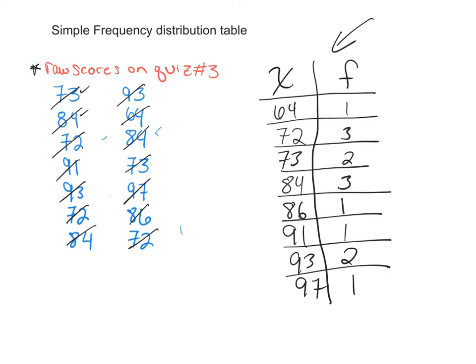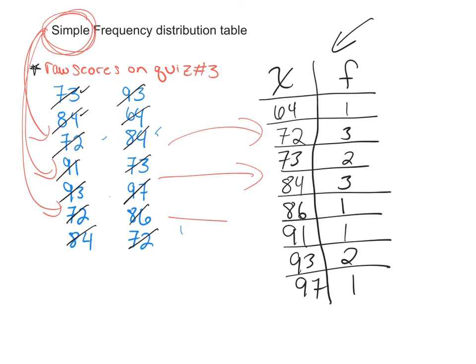So again, what this is, this is a simple frequency distribution chart. The reason I keep saying simple is that each one of these raw scores down here has a place somewhere on this frequency distribution table.